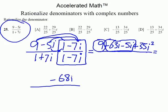We have a 9 that doesn't combine, plus 35i squared. We're going to use our knowledge that i squared equals negative 1. We replace i squared with negative 1, and 35 times negative 1 becomes negative 35. So i squared just changes the sign of the coefficient in front of it. Negative 35 and positive 9 gives us negative 26.